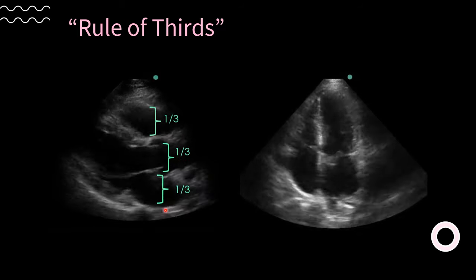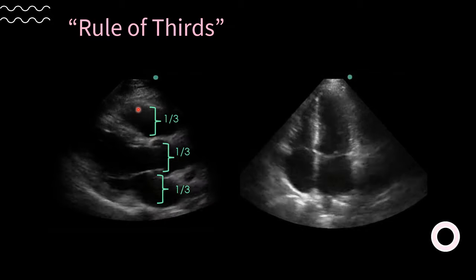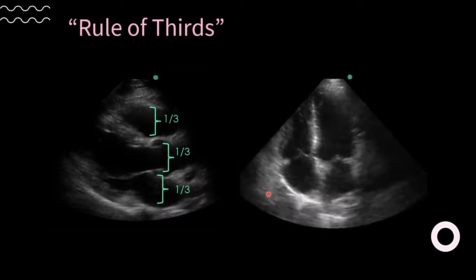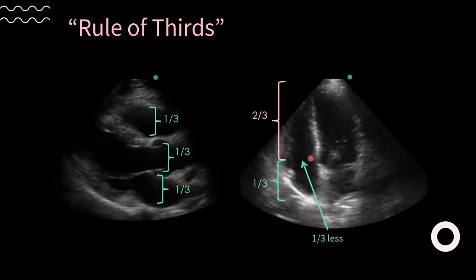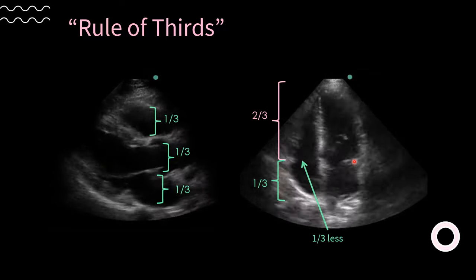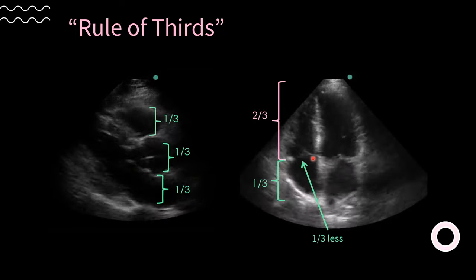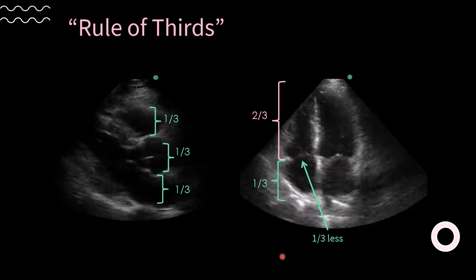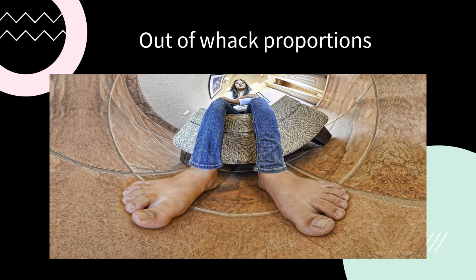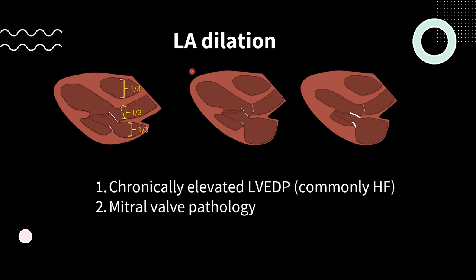In normal cardiac proportions, the left atrium, aortic valve, and right ventricle are all approximately one-third of the heart. In the apical four-chamber, two-thirds are taken up by the ventricles and one-third by the atria, with the tricuspid annulus about one-third less than the mitral annulus. If the left atrium violates the rule of thirds, this is most commonly caused by chronically elevated left ventricular end-diastolic pressures, as seen in heart failure, but mitral stenosis or mitral regurgitation can also cause this — for example, thickened mitral leaflets causing mitral stenosis.